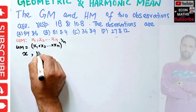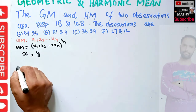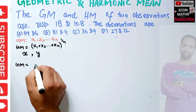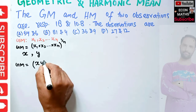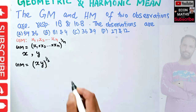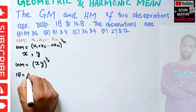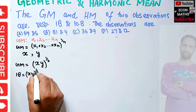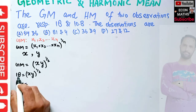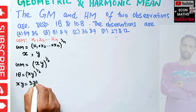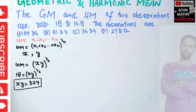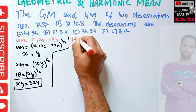Since we have only two observations X and Y, the geometric mean is simply the square root of XY — that is, XY raised to the power 1/2. We are told the geometric mean is 18, so 18 equals XY to the power 1/2. Squaring both sides gives us XY equals 324. This is our first result.